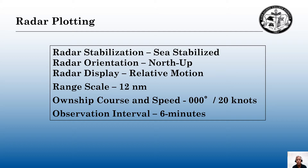At 20 knots in six minutes, I will travel two miles — you only have to move the decimal one place to the left. If I traveled at 18 knots in six minutes, I will have traveled 1.8 miles — you only have to move the decimal one place to the left.